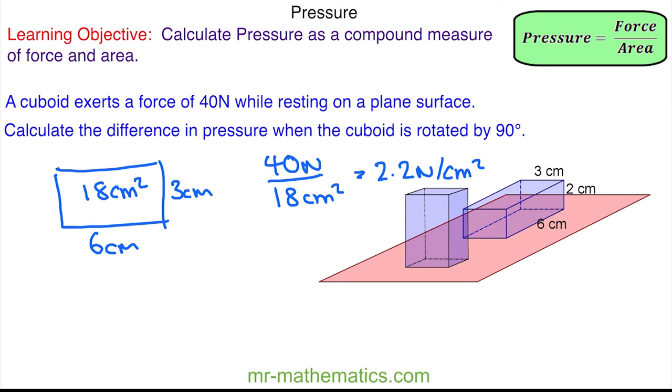And now as you rotate the cuboid, we have this base here where this length is now 3 cm and this length is 2 cm. So the area of our base now is 3 times 2, which is 6 cm².